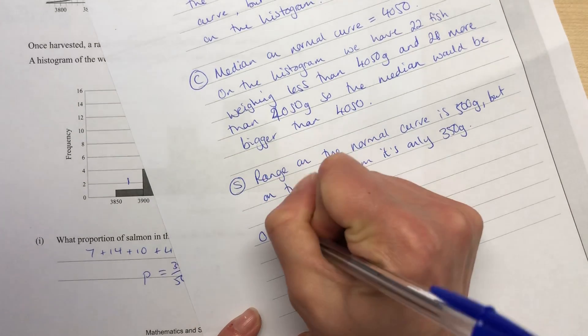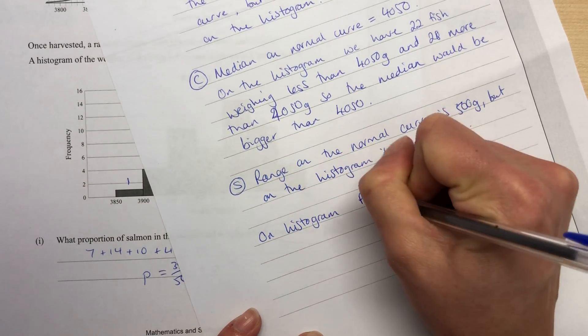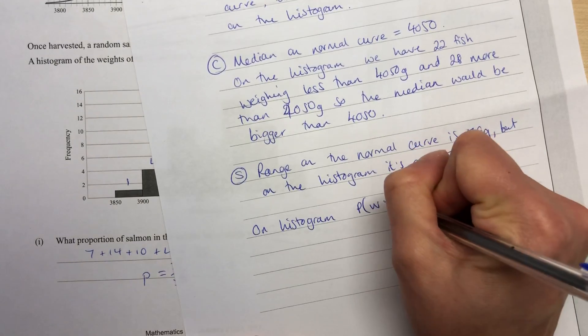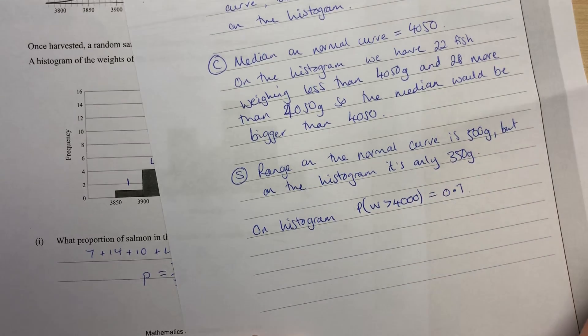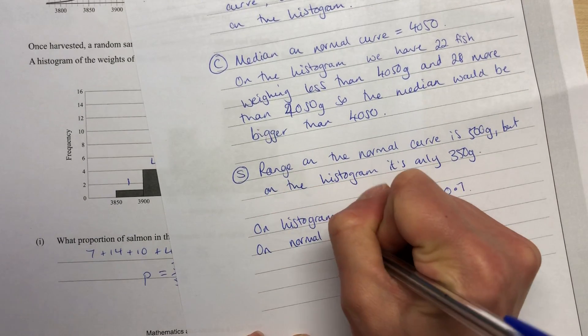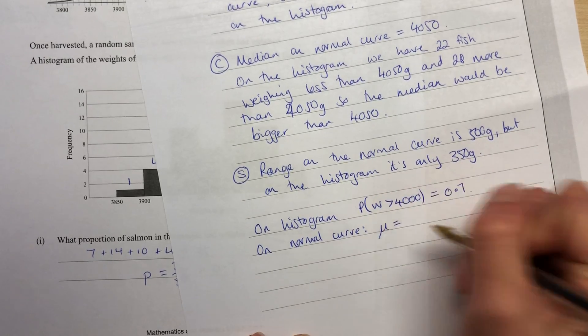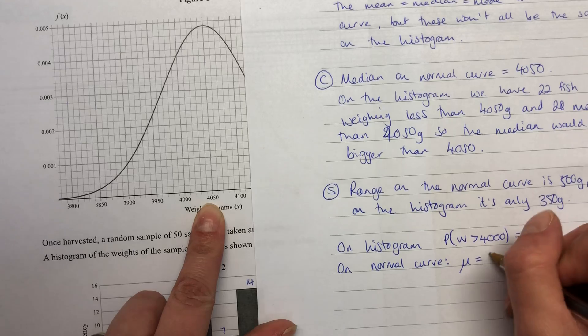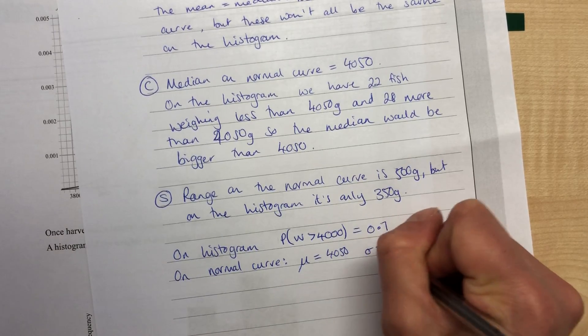Now, I've already worked out a probability here in part one, so I'm going to use that. So on the histogram, the probability that the weight was greater than 4,000 was equal to 0.7. I'm going to calculate that same thing on the normal curve. Now, to be able to do that, we've first of all got to say what the mean is, which is this 4,050.